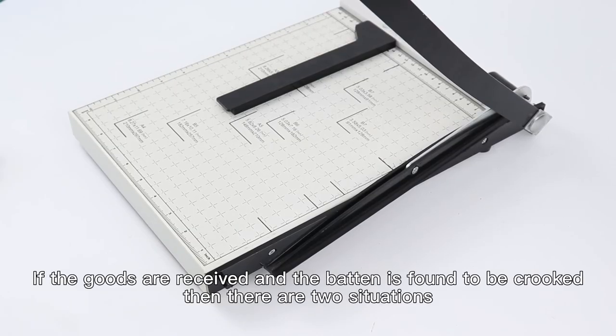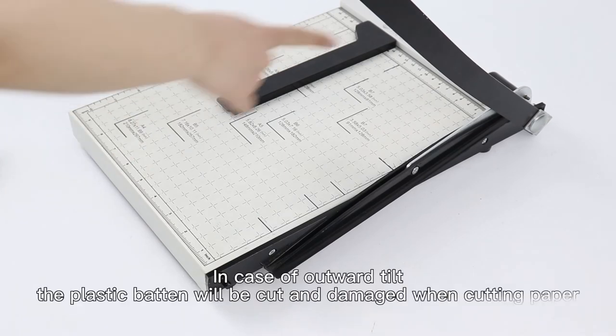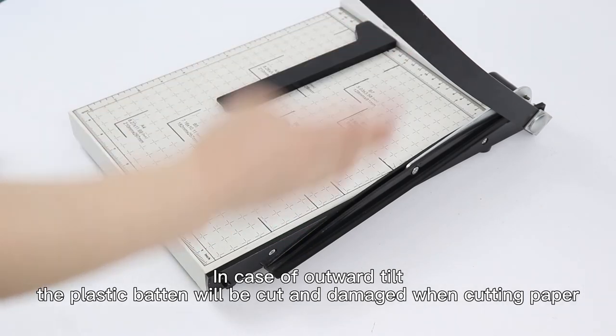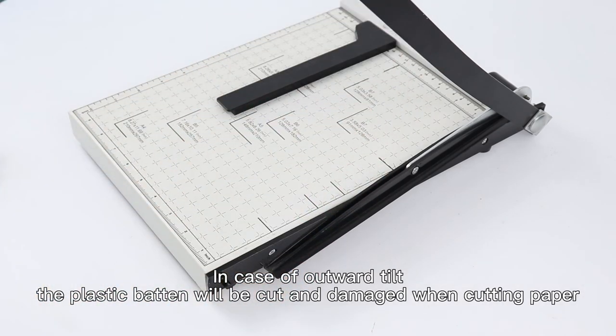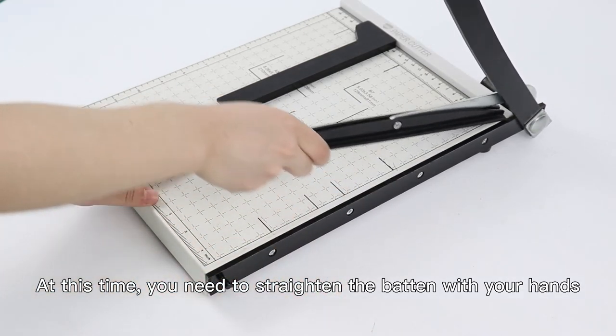If the goods are received and the baton is found to be crooked, then there are two situations. In case of outward tilt, the plastic baton will be cut and damaged when cutting paper. At this time, you need to straighten the baton with your hands.